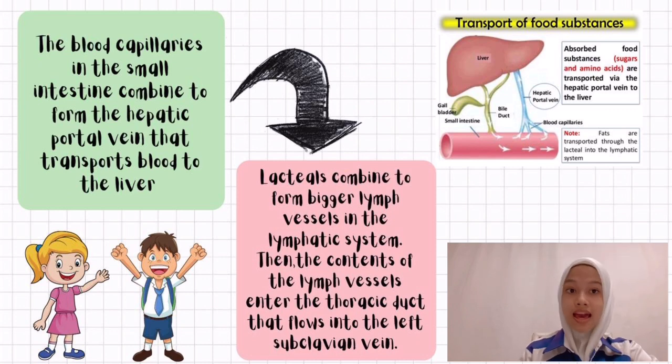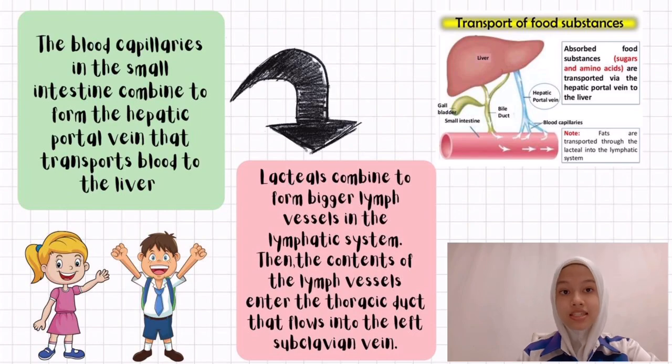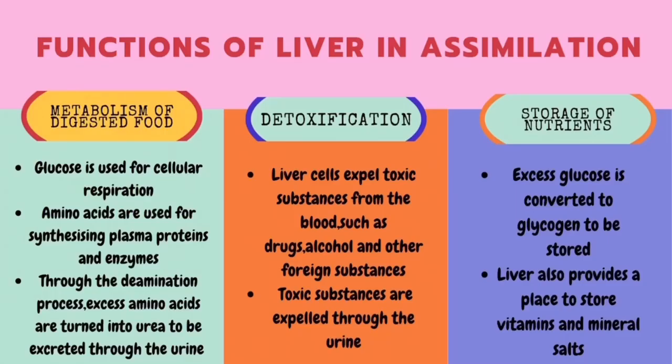The subclavian vein is part of the circulatory system, so at the end the lymphatic system merges into the blood circulatory system. There are three main functions of the liver in the assimilation process. The first is the metabolism of digested food.